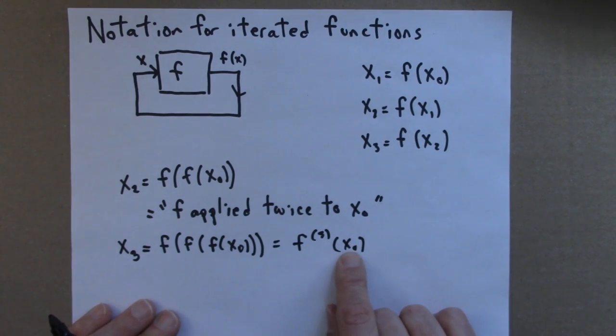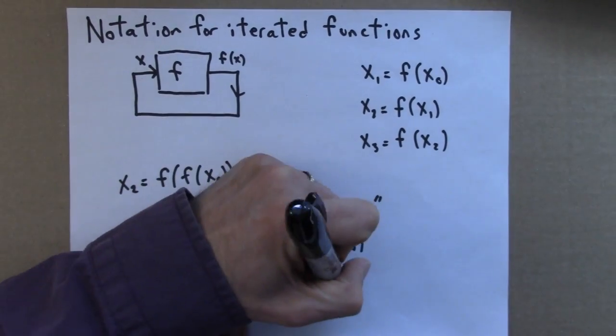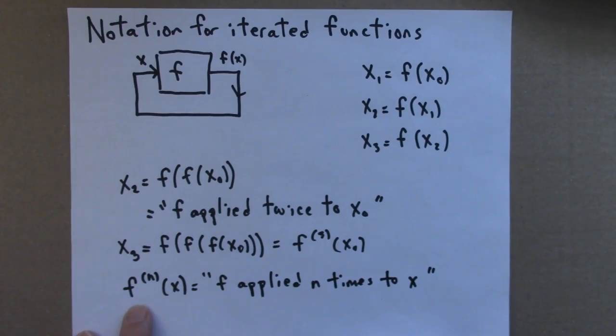And in general, this notation, f with an n up in a superscript in parenthesis, means f applied n times to x. It's doing f n times in a row to whatever the input was.